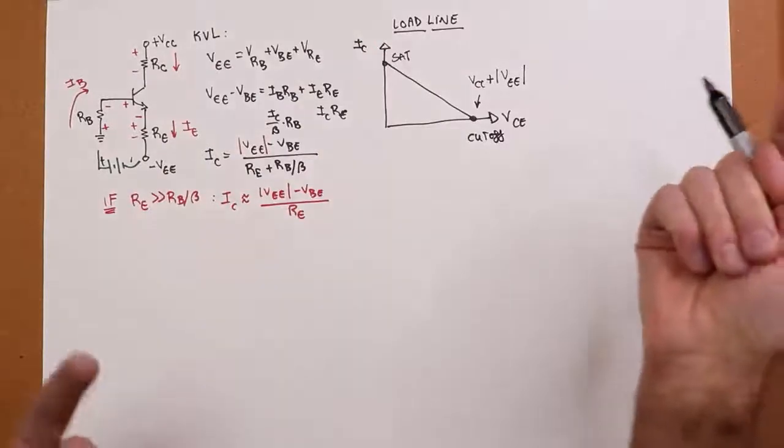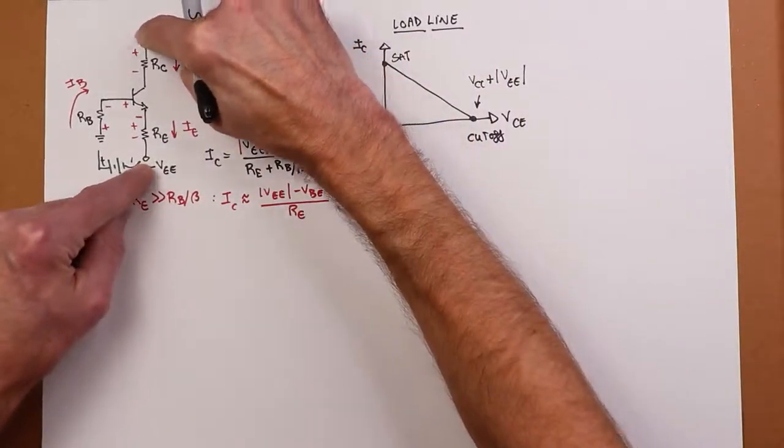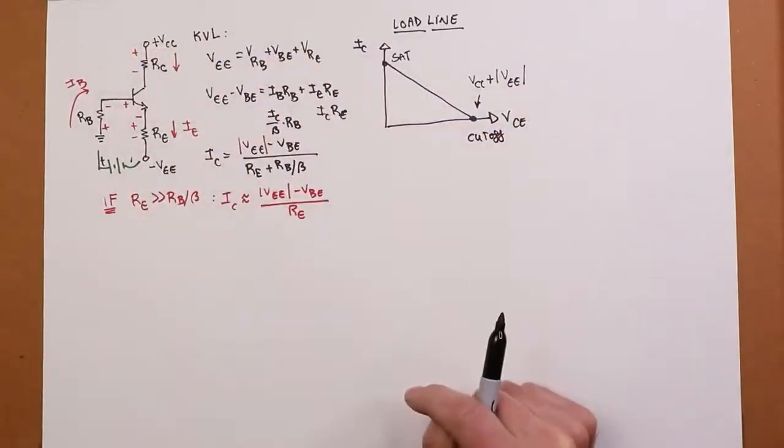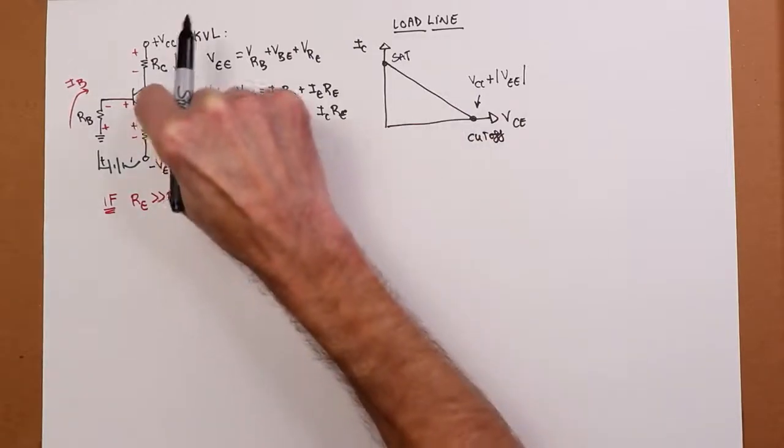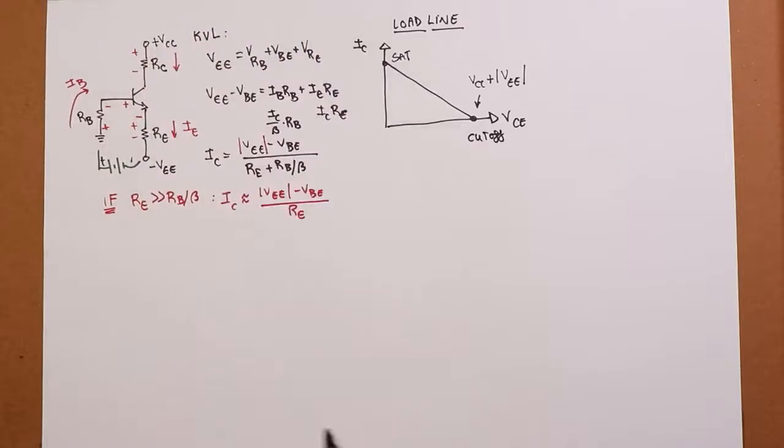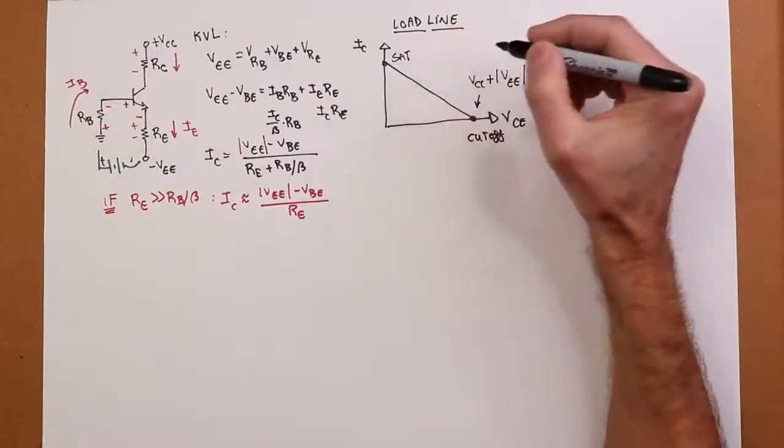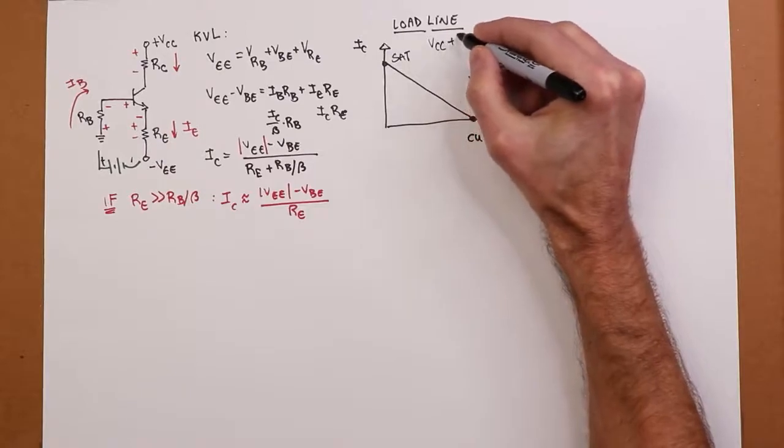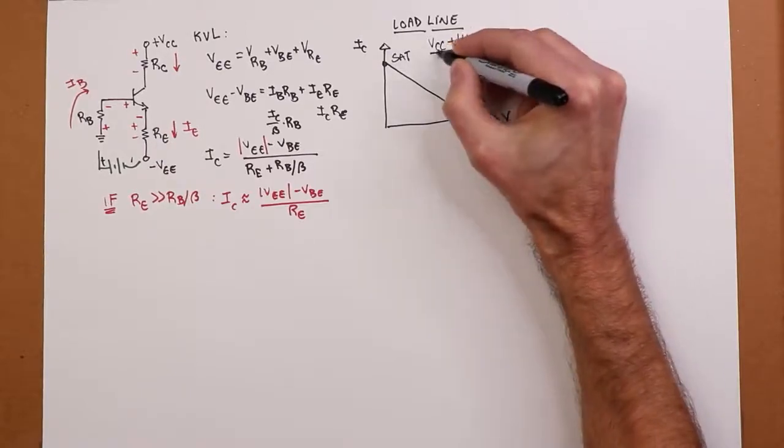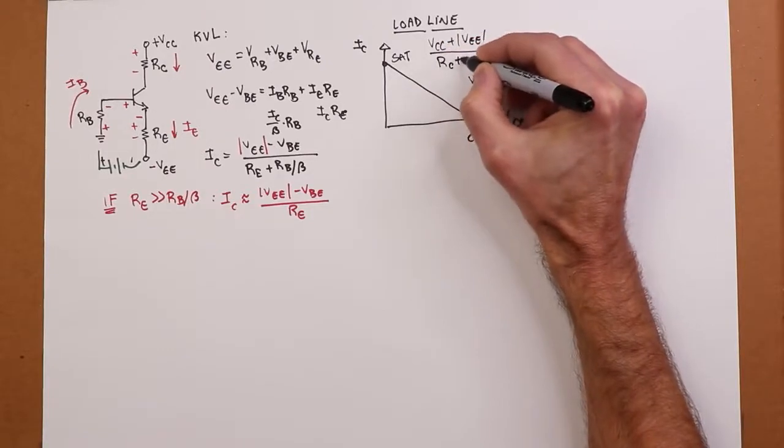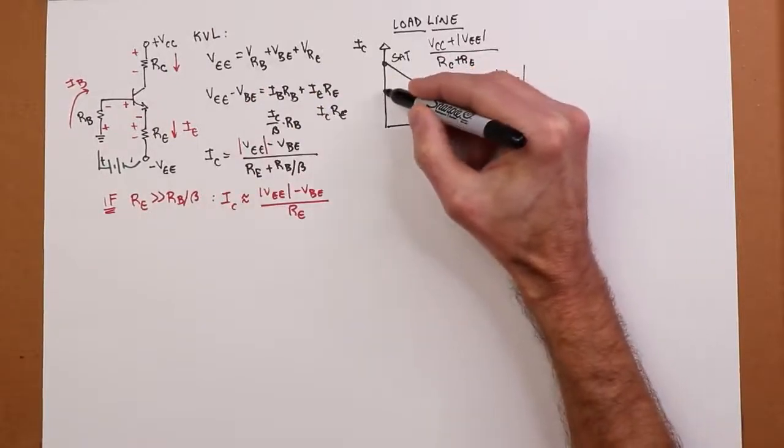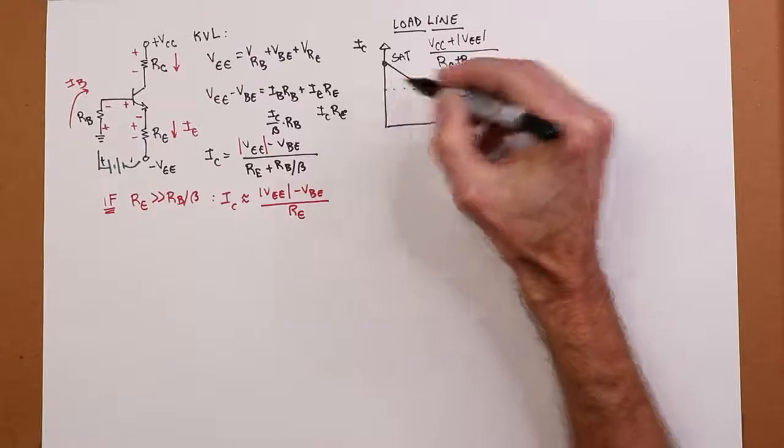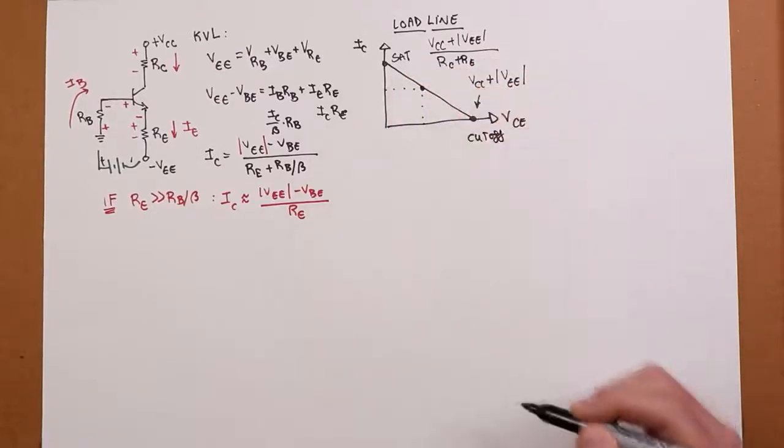In other words, if you just took your DMM in lab and you went plus to minus like this, red lead, black lead, that total potential is the cutoff voltage. Now, as far as the saturation current, again, that's where VCE goes to zero. So if that went to zero, that total potential would drop across the two resistors in the collector and emitter. So that is going to equal VCC plus the VEE divided by RC plus RE. And then you will have a Q point, if everything is designed correctly, somewhere out here. You'll have some value of IC, a quiescent value ICQ, and a quiescent value for the collector emitter, VCEQ. Beauty. Now let's do an example.